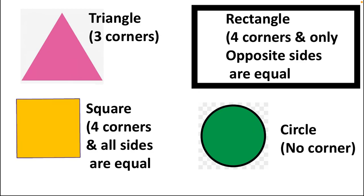Above the circle is the rectangle, represented through a black boundary. Its definition is that it has four corners and only opposite sides are equal. To distinguish between rectangle and square: in a square all sides are equal, like a Rubik's cube, while in a rectangle only opposite sides are equal, like a shoe box.